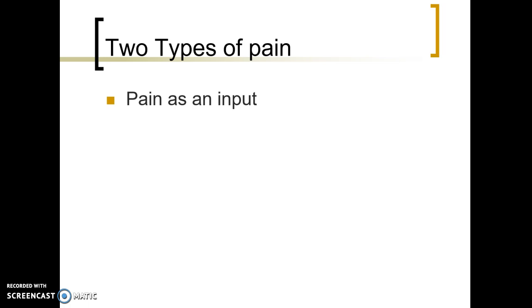There's also a second type of pain that we are going to see more consistently. Your average patient is very familiar with pain as an input, but not very familiar with pain as an output. Pain as an output is an occurrence within your brain where your brain is trying to protect you — or protect the patient — from further injury, but there's no physiological injury going on. It's a protective mechanism, a signal coming out of the brain that says you're hurting even though nothing is actually wrong.